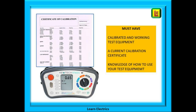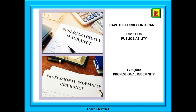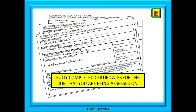You must have a working test meter, it must be calibrated, and you must have the calibration certificate — and most importantly, you must know how to use it. Make sure the correct insurances are in place and that you have the certificates to show the assessor. Your electrical certificates must be fully completed, especially for the job you are taking the assessor to. You will not get far in your assessment with half-completed paperwork.